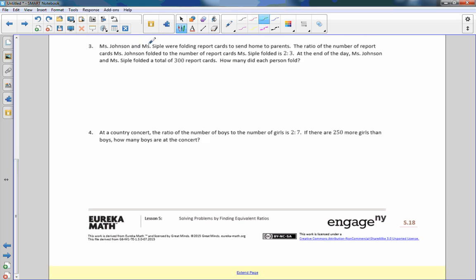Number three. Mr. John and Ms. Sippel were folding report cards to send home to parents. The ratio of the number of report cards Ms. John folded to the number of report cards Ms. Sippel folded was two to three. So I'm going to use J for John and S for Sippel, and it is two to three. So this is what my tape diagram will look like. John has two. Sippel has three. At the end of the day, Ms. John and Ms. Sippel folded a total of 300 report cards. So off to the side here, I have five squares. So five squares is going to equal 300. So if I take that 300 and divide by how many squares we have, then each square is worth 60. So this is 60, and this is 60. So John is 60 times 2, which is 120, and Sippel is 60 times 3, which is 180. 180 plus 120 does total 300.